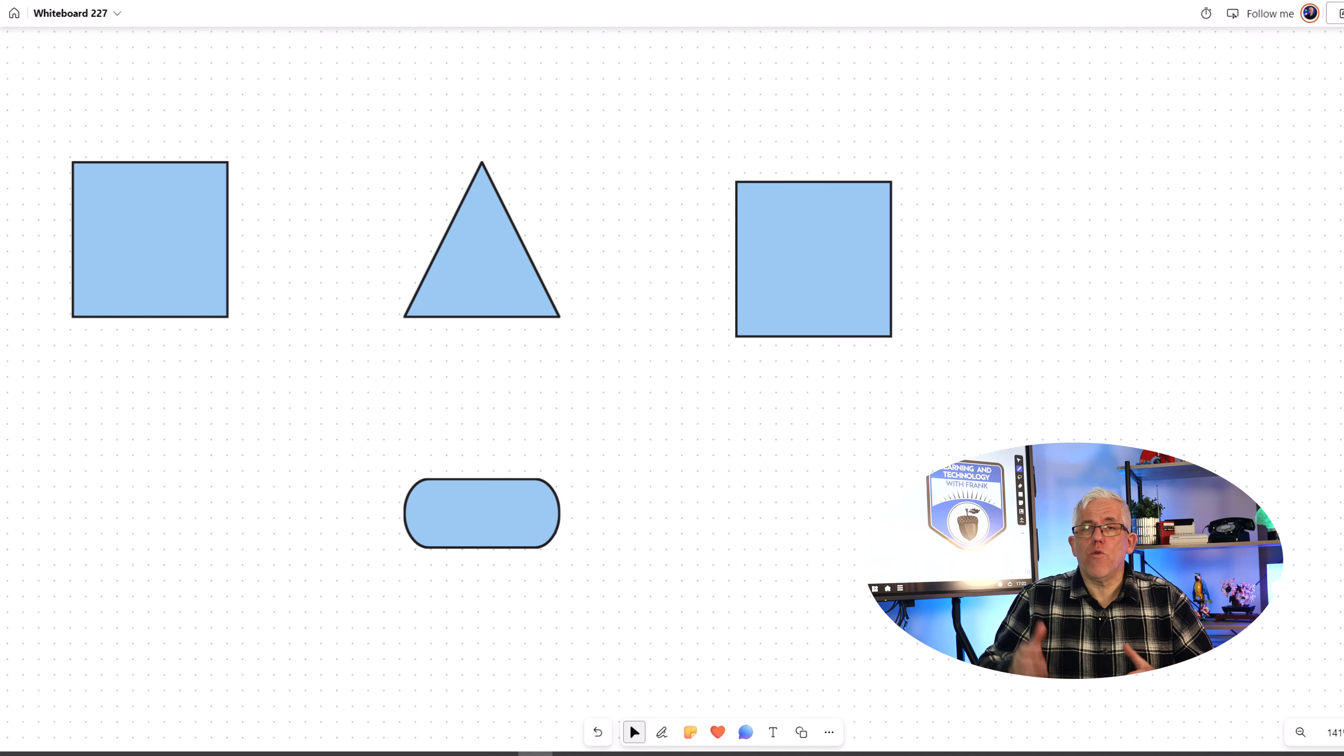Hello everyone, just wanted to make a quick video. There's a new feature in Microsoft Whiteboard, simple little feature, but I wanted to jump in and make a quick video for you. So here I have a whiteboard and I have four shapes on the whiteboard.